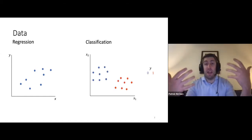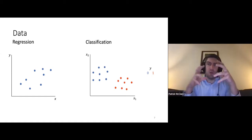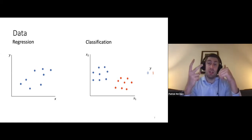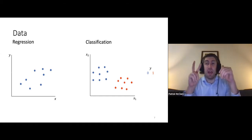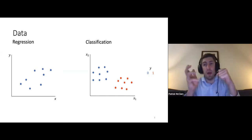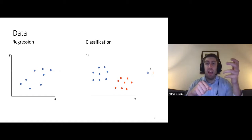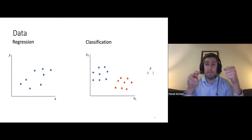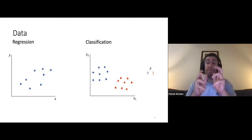Another very common type of data is classification data. One of the simplest cases is where you have an input with two dimensions — two values, x1 and x2 — which are both real-valued numbers. Each x1, x2 pair is associated with a certain class, in this case either blue or red. Blue is given a label of zero and red a label of one. The goal is: given an x1, x2 pair, should that point be classified as blue (label zero) or red (label one)?